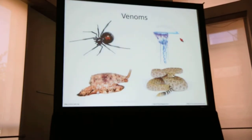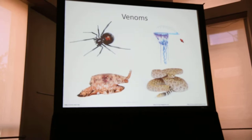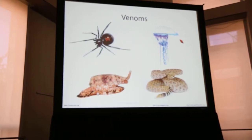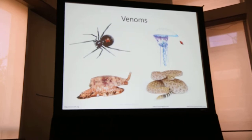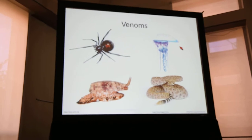Venoms are really powerful systems for studying the genetic basis and function of adaptive traits, because they are confined to discrete ecological roles such as prey capture and defense, and also because the changes in transcription and patterns of gene evolution can be associated directly with shifts in ecology.